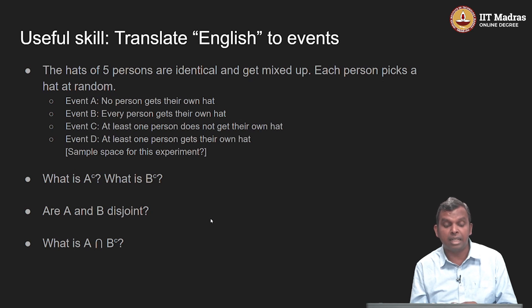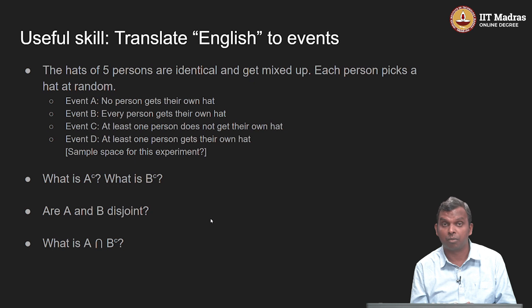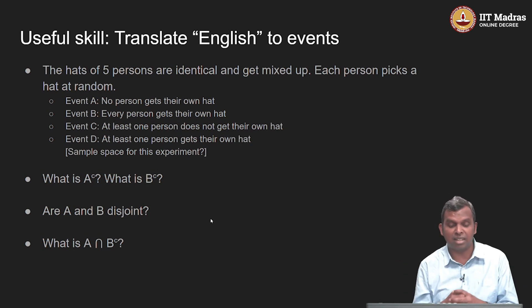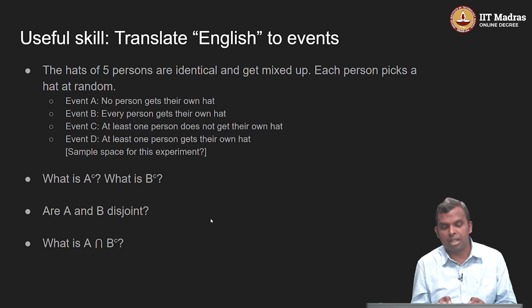The next question is: are A and B disjoint? Look at the two events — no person gets their own hat versus every person gets their own hat. Yes, A and B are disjoint. If A occurred, no person should be getting their own hat, so B definitely did not occur. There is no outcome where both A and B occur at the same time, so A intersect B is the null set.